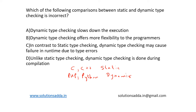Option D states: unlike static type checking, dynamic type checking is done during compilation. This is false by the definition of dynamic type checking — it is done during runtime. Since the question asks us to find the incorrect option, option D is the incorrect statement and therefore the correct answer.